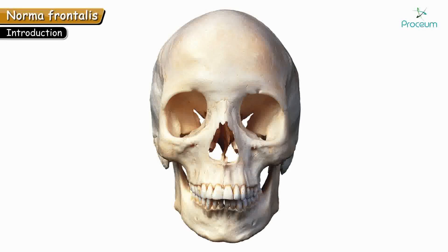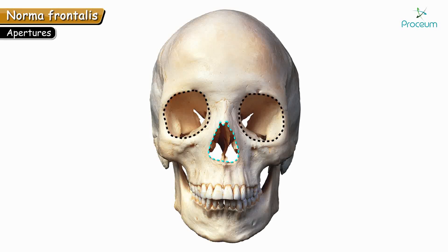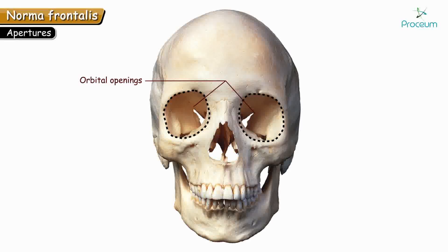Let's see each part in detail. We shall begin with the apertures. There are three large openings: the two orbital openings present on either side below the frontal bone, and the large middle opening is called the anterior nasal aperture.